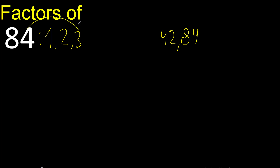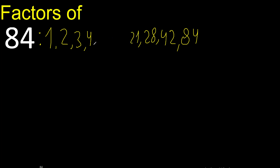divided by 3 is 28. Next, 4 divided by 4 is 21. Next is 5 but 84 cannot be divided by 5. Next is 6, divided by 6 is 14.